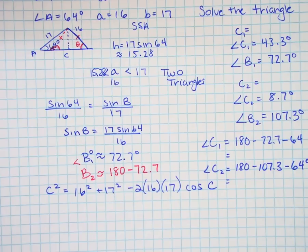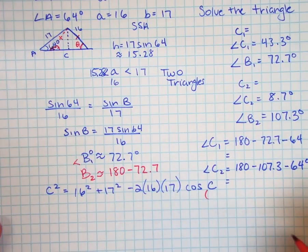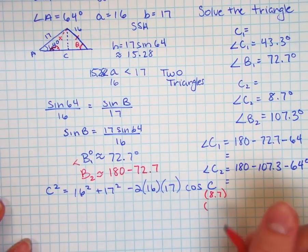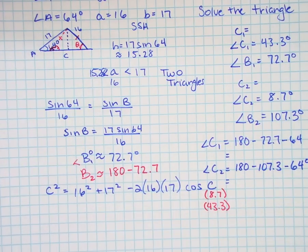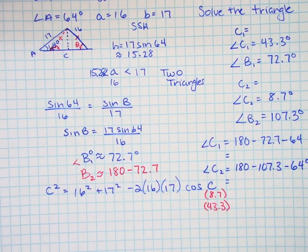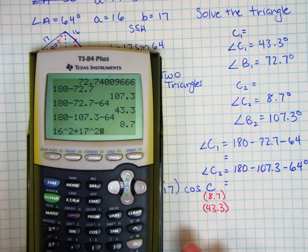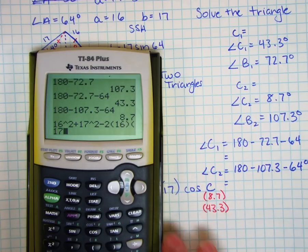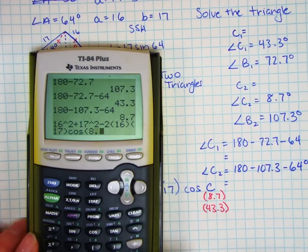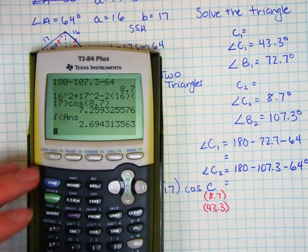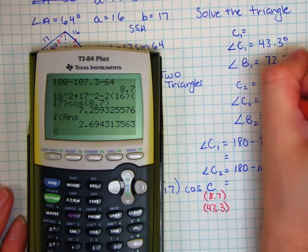And so finally, I need to do this twice in my law of cosines. I'll either be inserting here an 8.7 degrees for C2, or I'll be inserting 43.3 degrees for C1. And evaluating that, using my calculator here, I've got my 16 squared plus 17 squared minus 2 times 16 times 17 times cosine of 8.7. I'll do that one first. Remember, this is the squared C, so I take the square root of my answer. And so C2 is approximately 2.7.